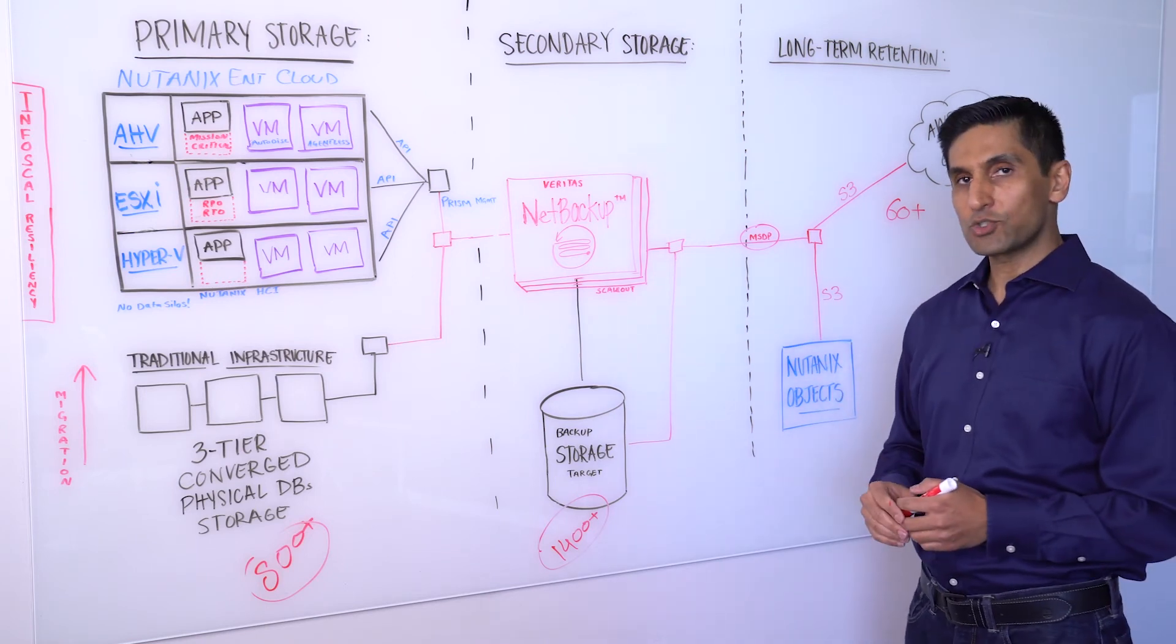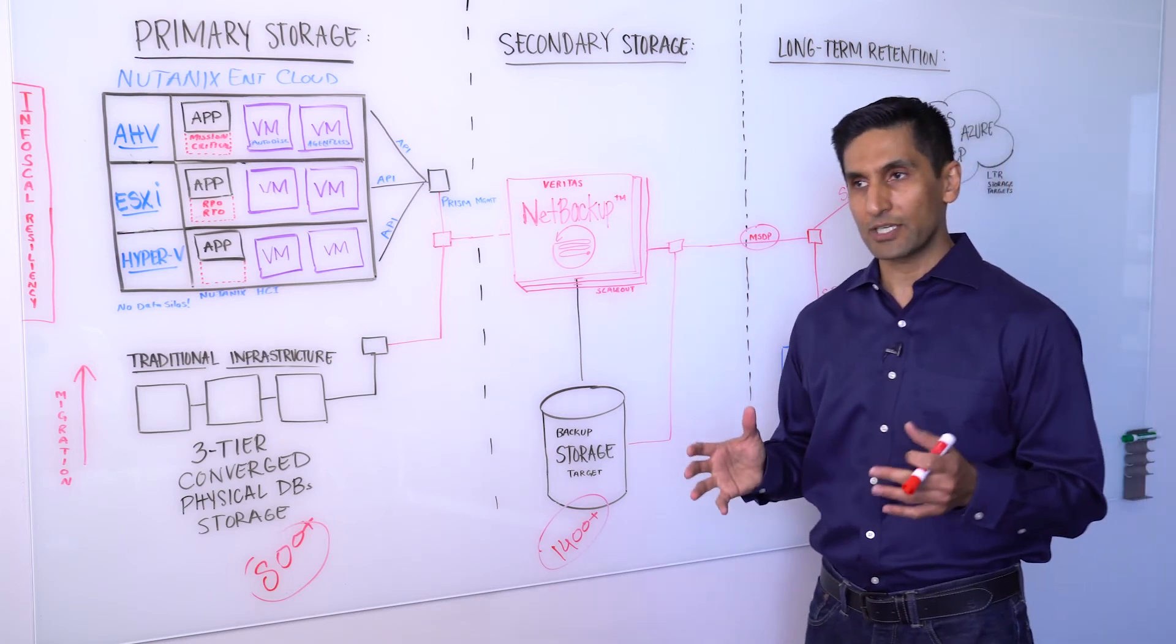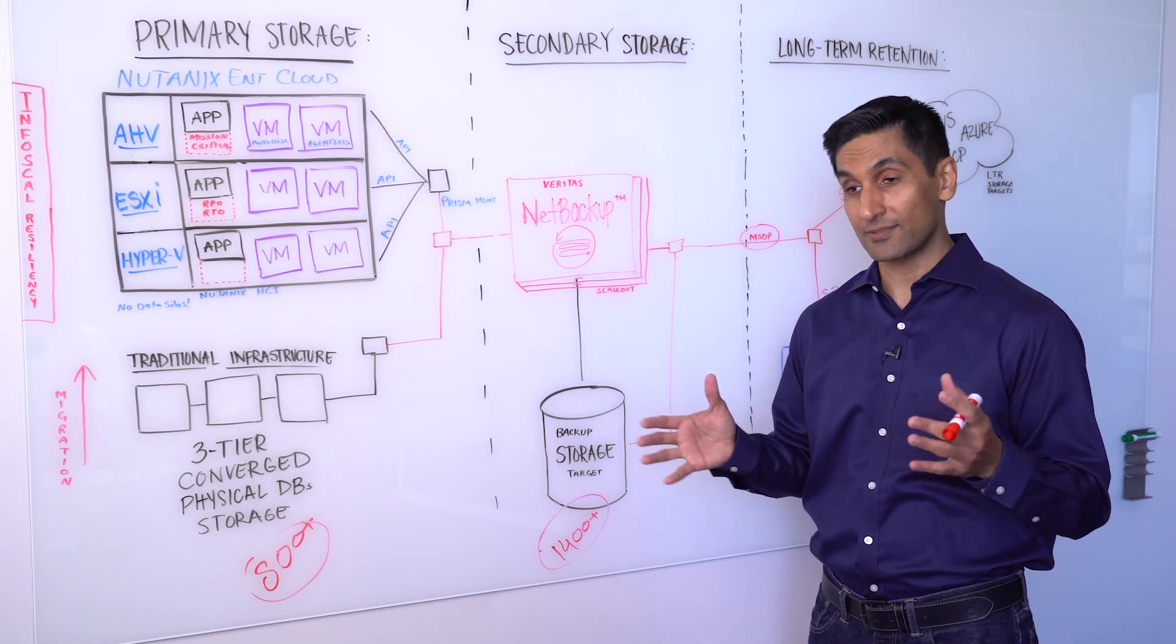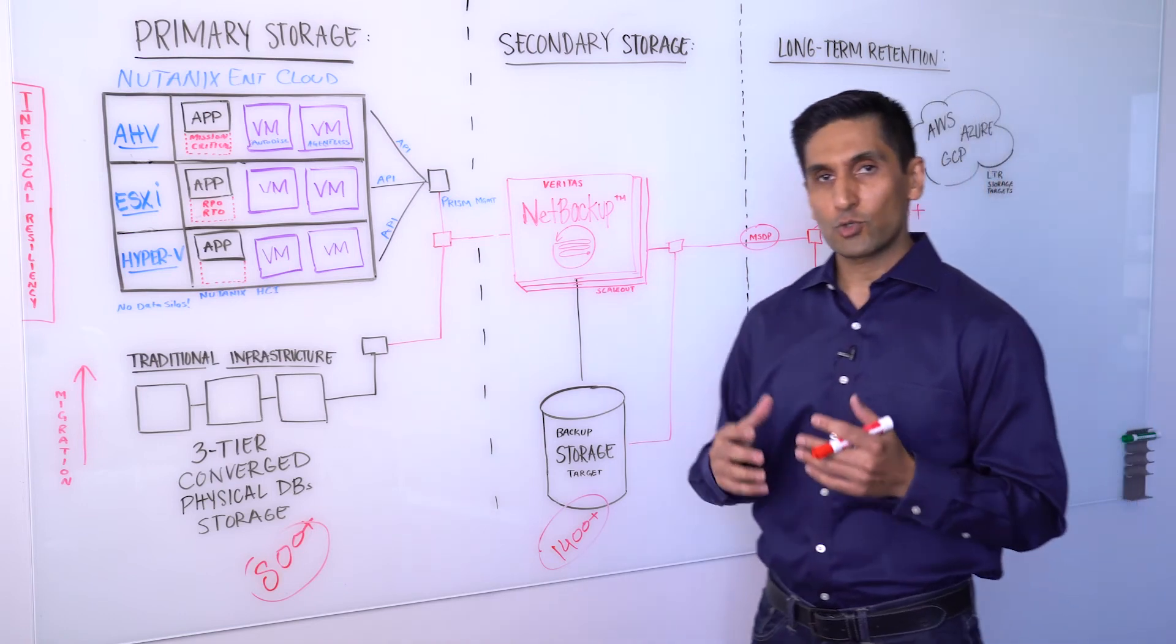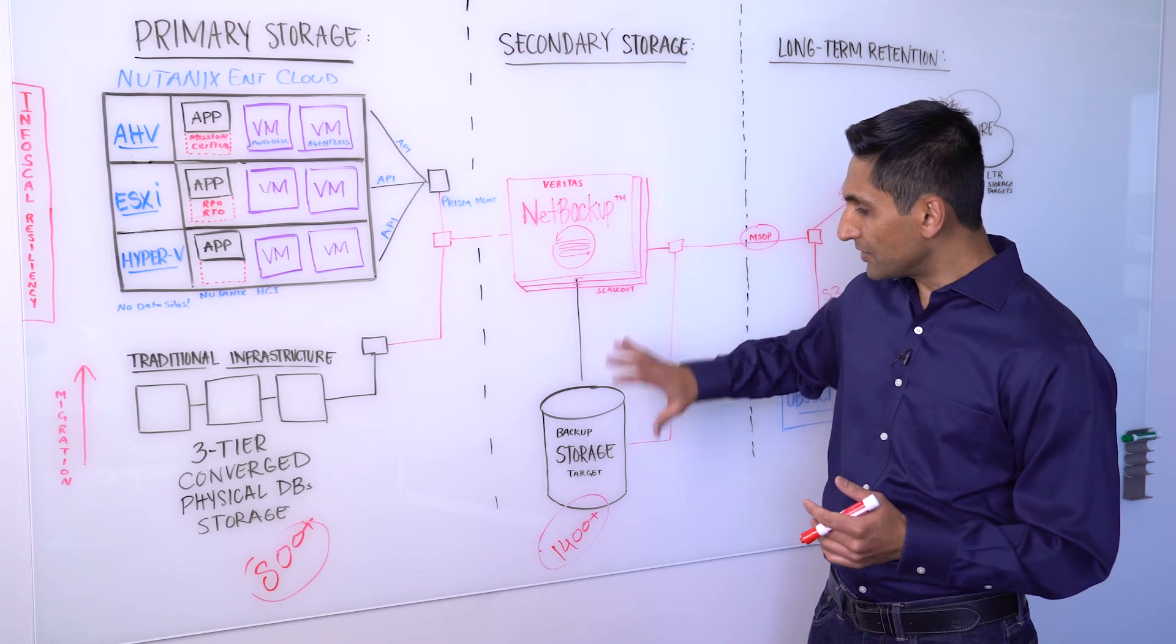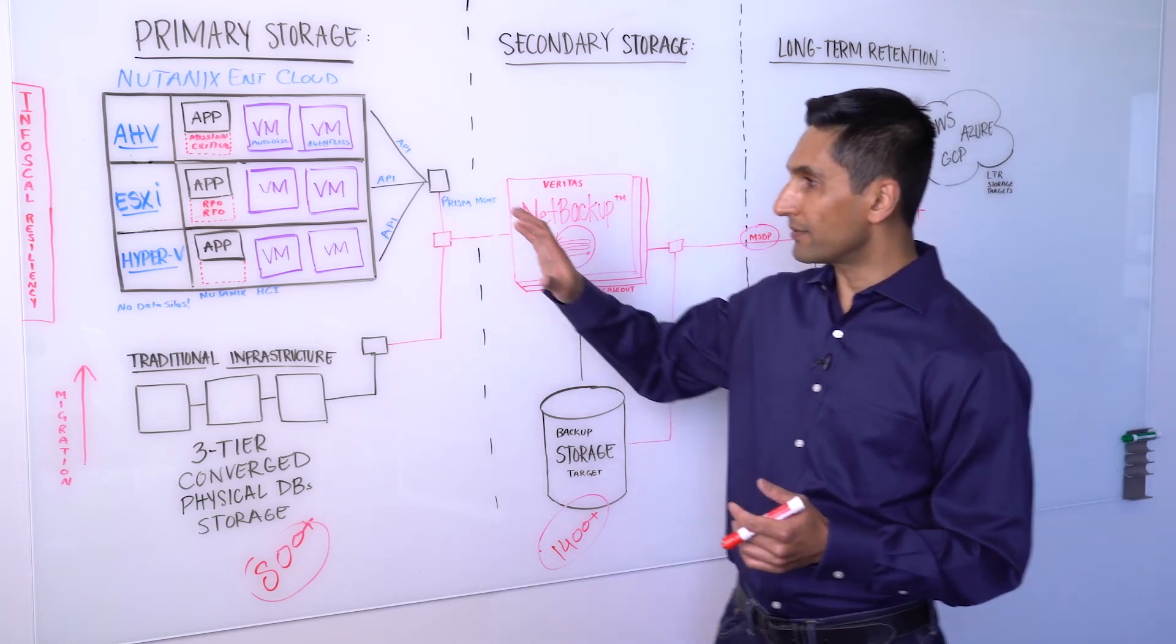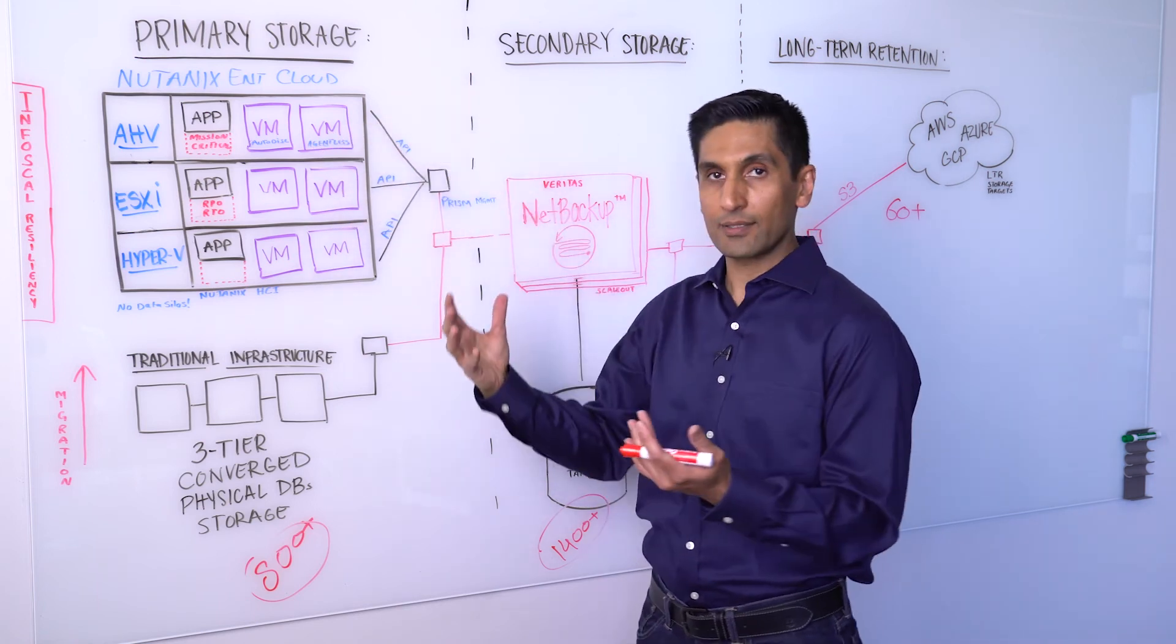Now one unique thing about this solution is MSDP, which is our deduplication technology. As you guys are aware, deduplication shrinks the data or reduces the size of data significantly. And depending on the data, it could shrink the data or reduce the size of data, you know, 60%, 80%, or even in some cases up to 90%. So the value we add in this solution, throughout the industry a lot of people deduplicate their data when it's already moved from primary storage to secondary storage. We provide our customers a unique option where they can deduplicate the data at the source.